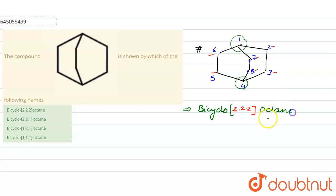So this is the correct IUPAC name for this compound. Now let's see in the option. First option is bicyclo[2.2.2]octane and we have written the same name, so this is the correct option.